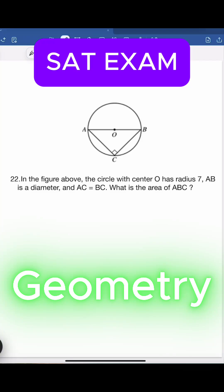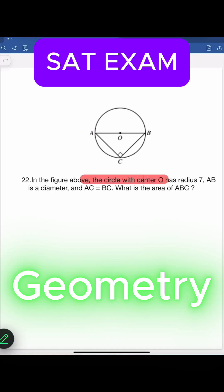Let's solve a geometry question from SAT exam. In the figure above, the circle with center O has radius of 7, AB is the diameter and AC is equals to BC. So it is an isosceles triangle also. We have to find the area of triangle ABC.